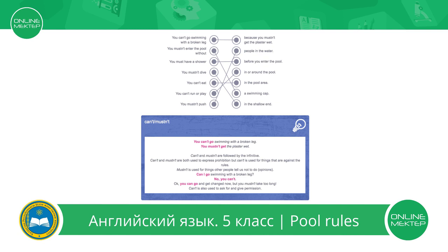Look at this sentence, please. Can I go swimming with a broken leg? No, you can't. You can go and get changed now, but you mustn't take too long. Mustn't take too long means someone gives you advice not to be too long. Can't is also used to ask for and give permission, as in: can I go swimming with a broken leg? No, you can't — so you don't allow someone to go swimming. You can't go swimming with a broken leg because you don't allow someone to do this. You mustn't get the plaster wet — you advise someone not to get the plaster wet.